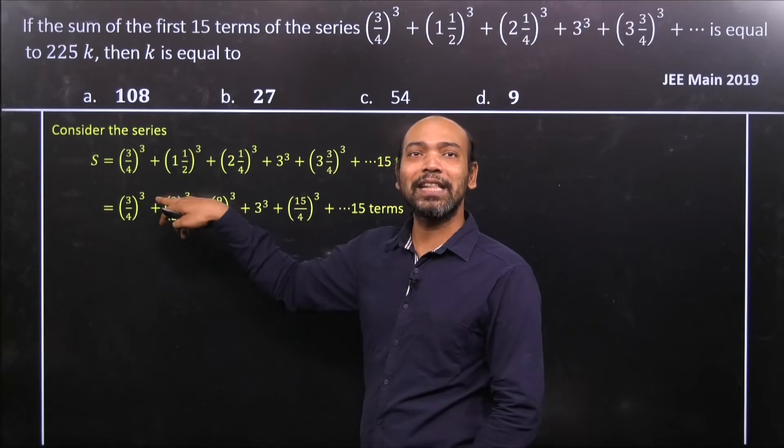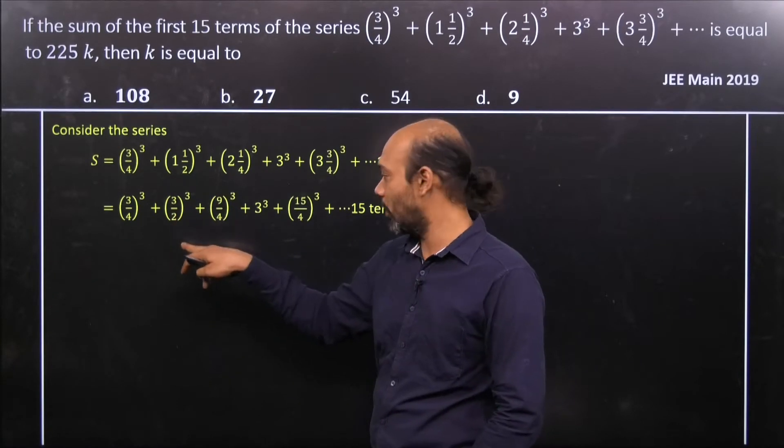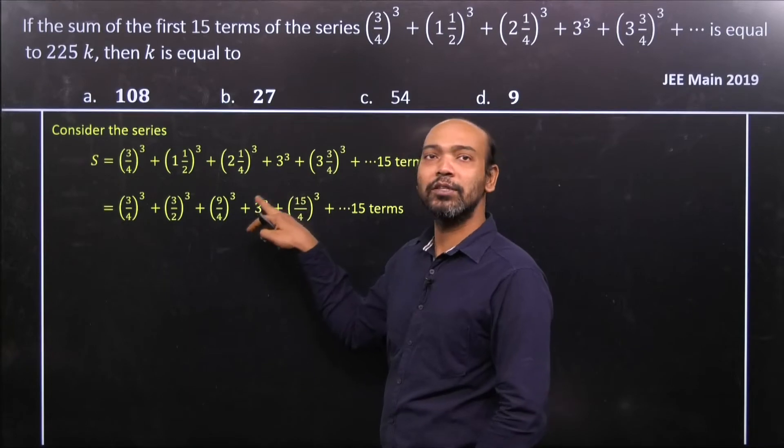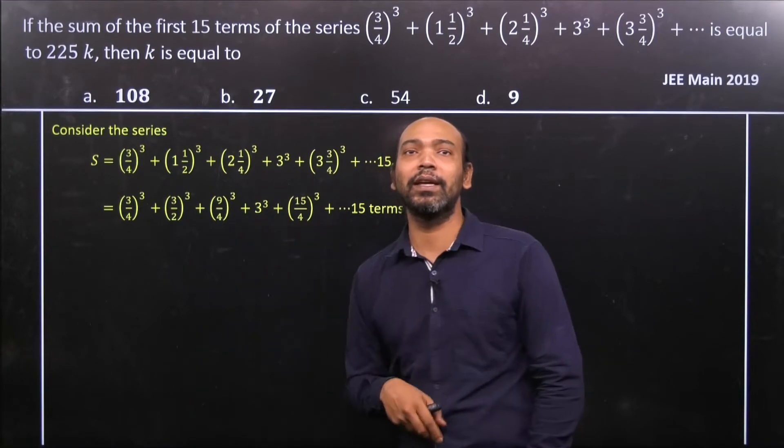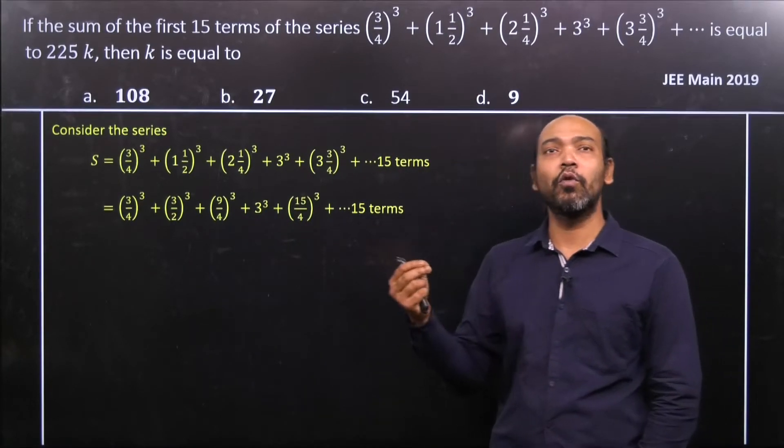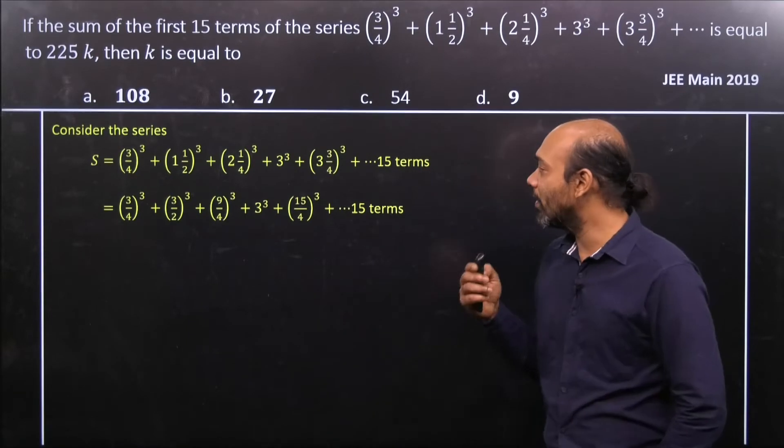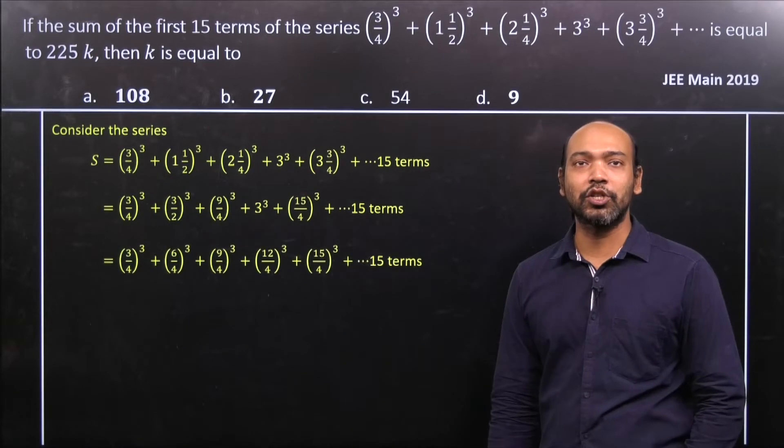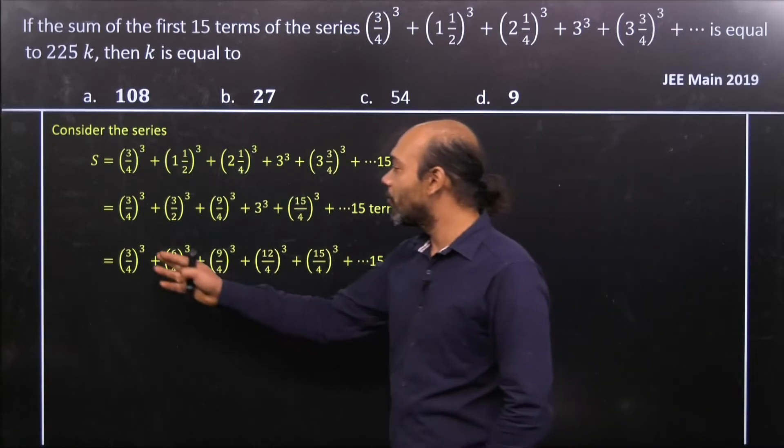Now that term can also be changed. 3³ means 8, 3 times 4 is 12, so 12/4. So that's why we now get a general representation. We can understand that first term is 3, second is 6, third is 9, so the numerator goes on in the form of 3 multiplied by r.